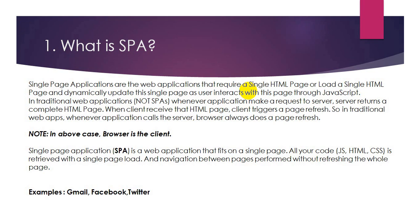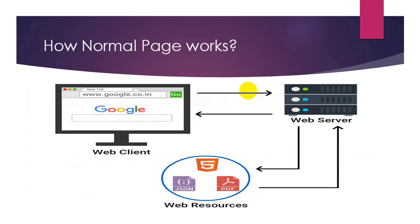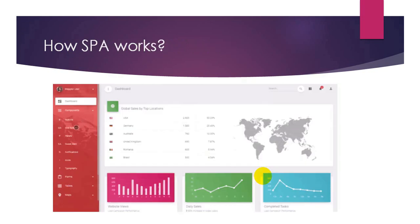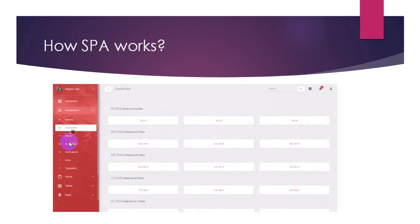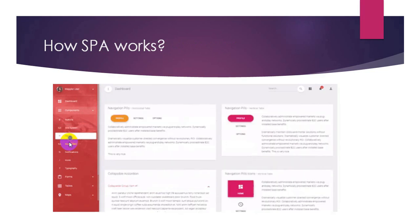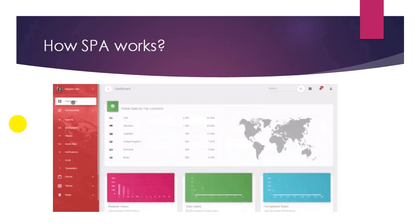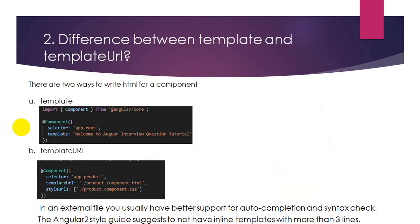Some examples of single page applications are Gmail, Facebook, and Twitter. In a normal web application, if you type www.google.co.in your request goes to the server, which serves the HTML page along with CSS and JS. If you click on About or Contact, another request goes to the server and a complete page load occurs. In an SPA, clicking on navigation causes no page refresh at all, because all the JS is already on the client side. The next question is the difference between template and templateUrl.